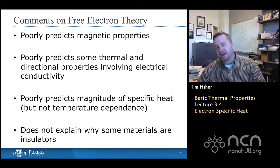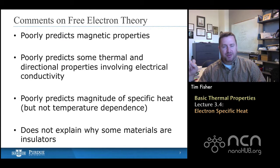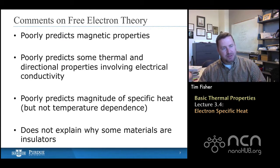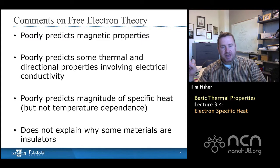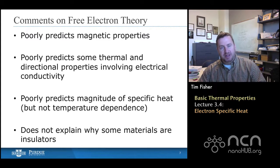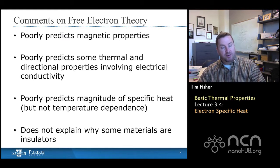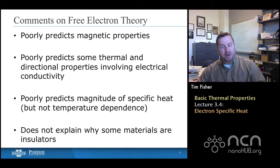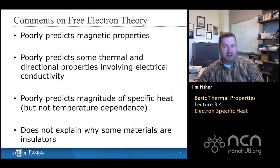I just wanted to make a couple of comments about what we've done here, which is really free electron theory. There are a number of failures that have nothing to do with thermal things, but I've included some of them here. It poorly predicts magnetic properties, some thermal properties, and other directional properties. The magnitudes of specific heat predicted by this theory are generally off, but the temperature dependence is quite good. So if you see a linear temperature dependence in a specific heat, it's either because at high temperature, it's at a high temperature relative to the Debye temperature for phonons, which means that their contributions are constant, or that the electronic part just dominates over the phonon parts in the first place. And another big failure of the free electron theory is that it really does not explain why some materials are insulators.